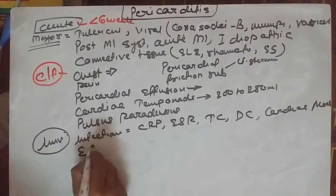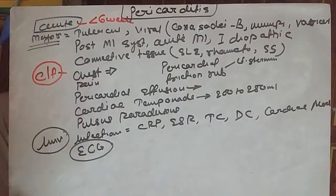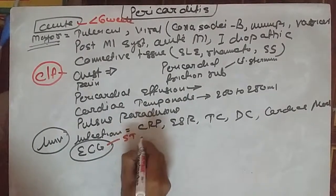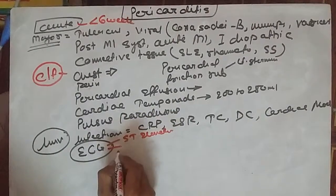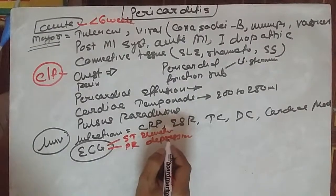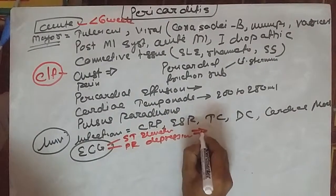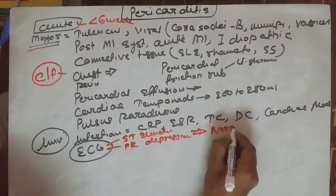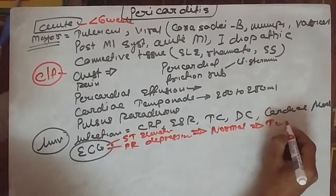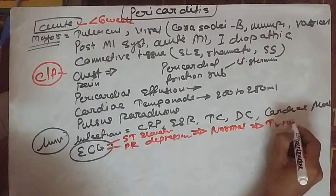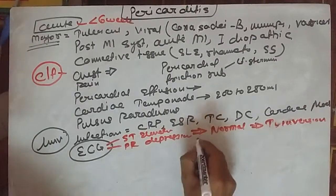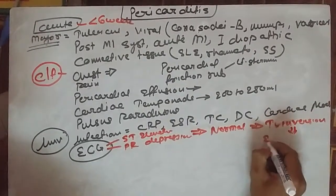The ECG findings are very specific. In the early stage there is ST elevation with depression of the PR segment. Subsequently, ST and PR segments become normal. After normalization of ST and PR, there will be T wave inversion. In the late stage, all ECG findings become normal.